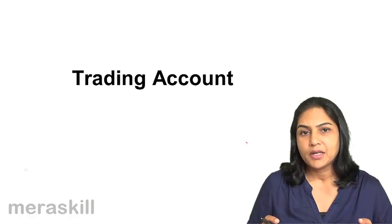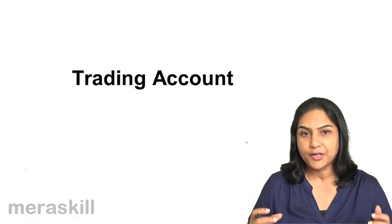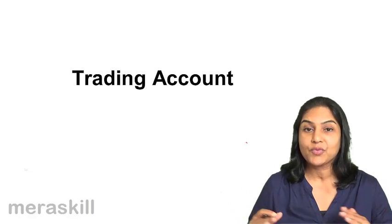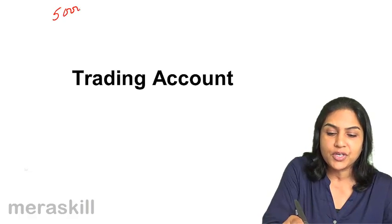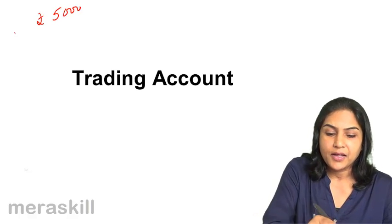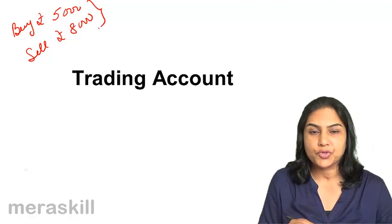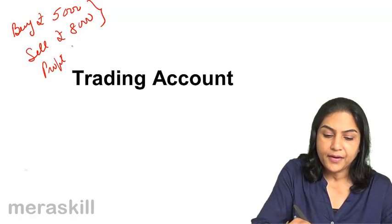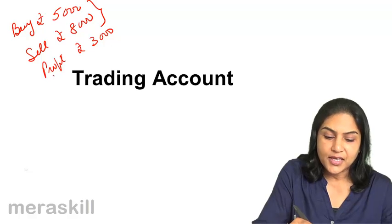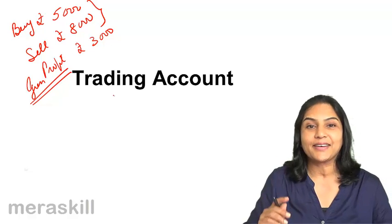Let us say for example, we trade. We have a shop which sells mobile phones — we buy phones and we sell phones. Let us say we buy phones for rupees 5,000 each and we sell these phones for rupees 8,000 each. Per phone we make a profit of rupees 3,000.